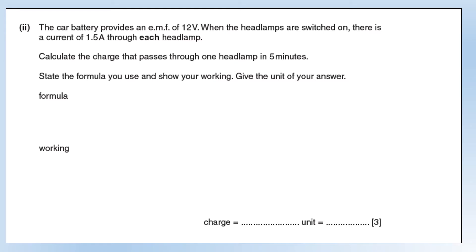The car battery provides an EMF of 12 volts. When you switch the headlamps on, there's a current of 1.5 amps through each headlamp. Calculate the charge that passes through one of the headlamps in five minutes. The equation we're going to need is Q equals IT, because we've been given time and given the current, so we can calculate the charge. But we need the time in seconds to use it in an equation. So that's why it's five times 60 to convert into seconds, giving us a charge of 450 coulombs.